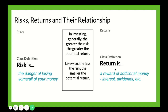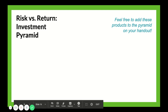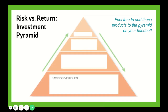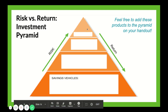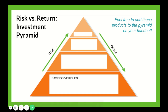You might ask, why don't we always go for something with bigger returns? The fact is, if you go for something that's high risk, your options are big returns or sometimes a total loss of your money — that's why we call it risk. On the pyramid of investments, risk and return have a relationship. Feel free to add these products to the pyramid on your handout.